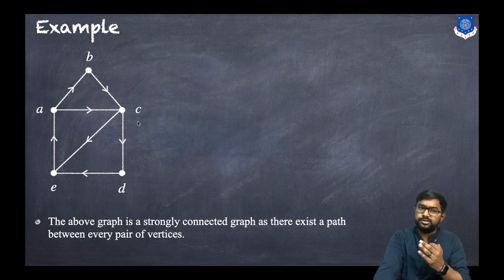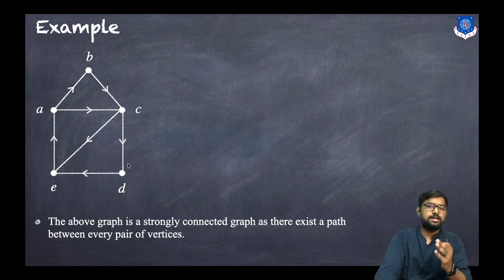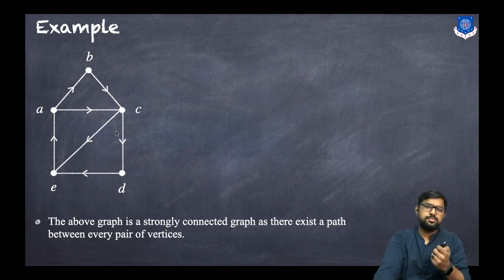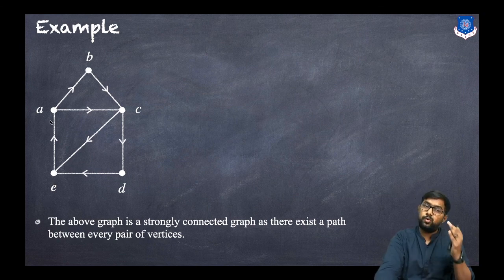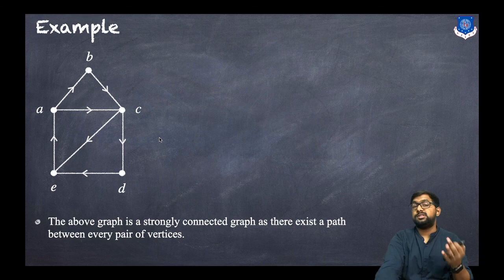Now consider a and c: we have a to c, and for c to a we have c→e→a. So there are paths in both directions. Consider c and d: we have c to d, and for d to c consider d→e→a→b→c. Consider c and e: we have the path c→e, and for e to c consider e→a→c. This is how you can check each and every pair of vertices having paths to and fro, so it is a strongly connected graph.